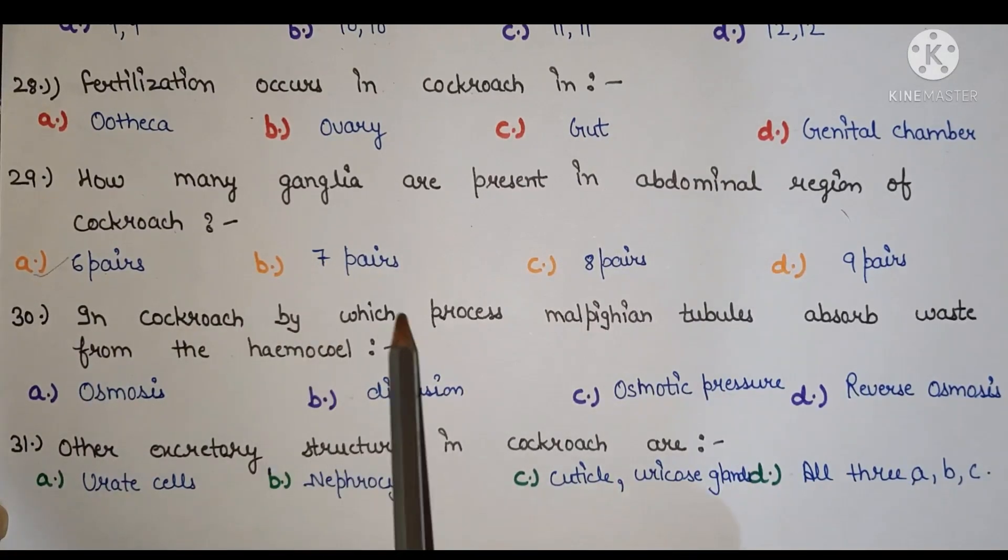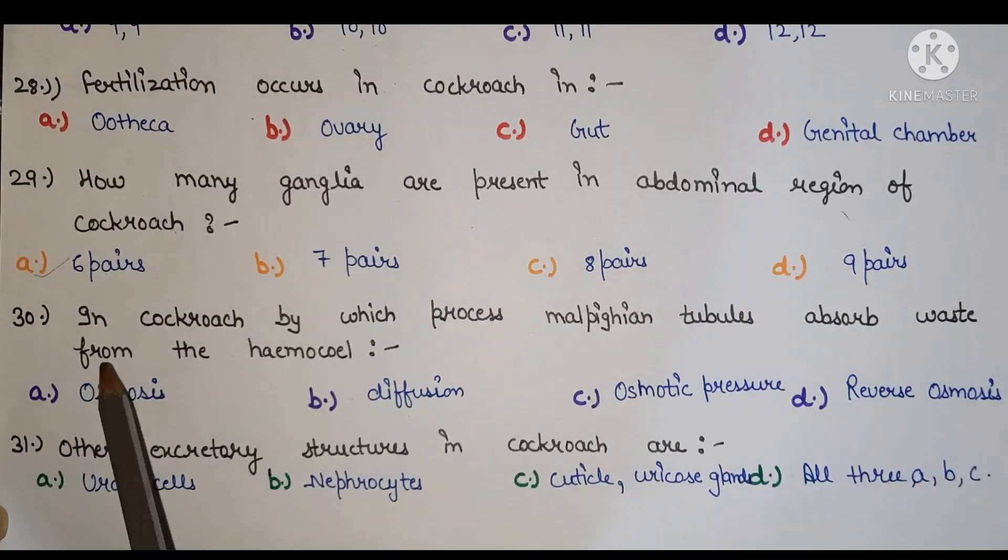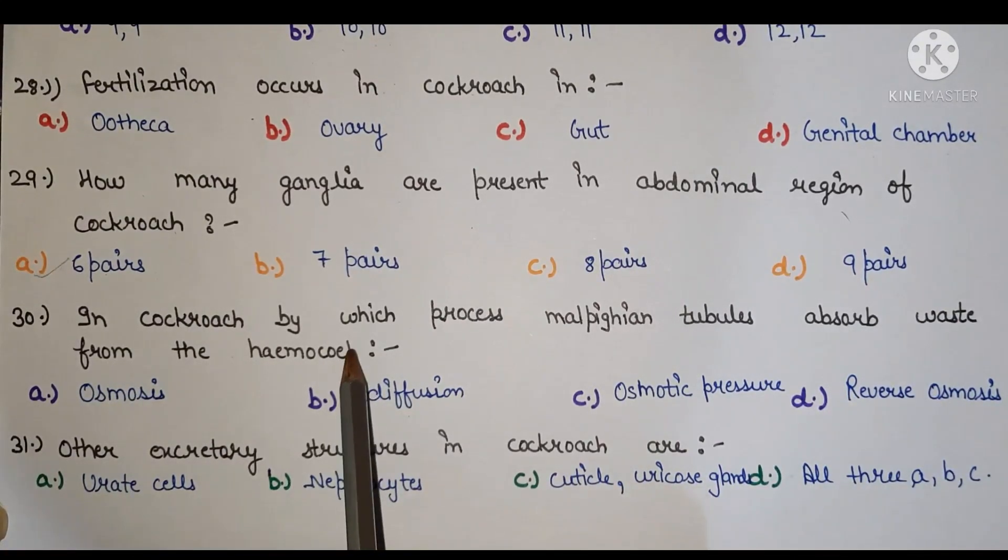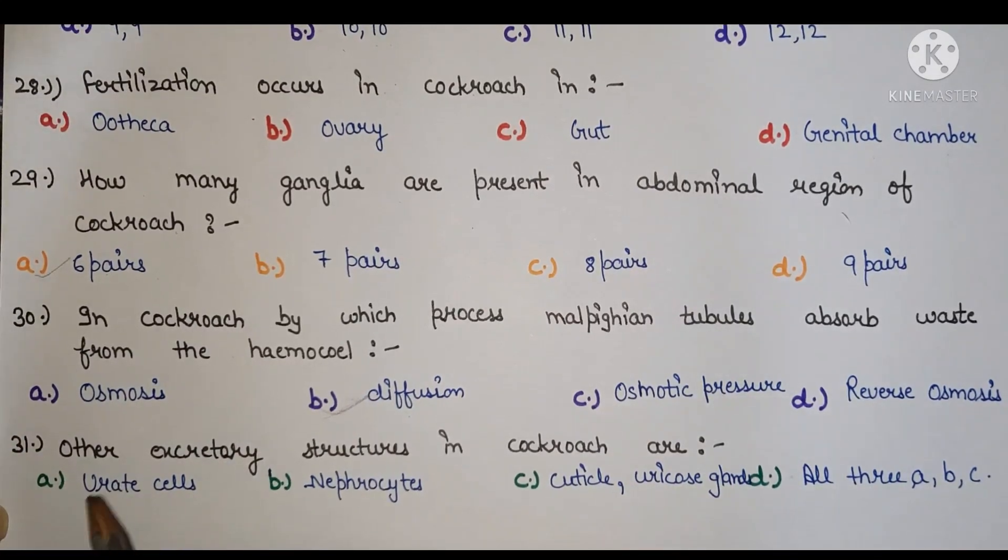Next, in cockroach by which process Malpighian tubules absorb waste from the hemocoel? The right answer is diffusion.